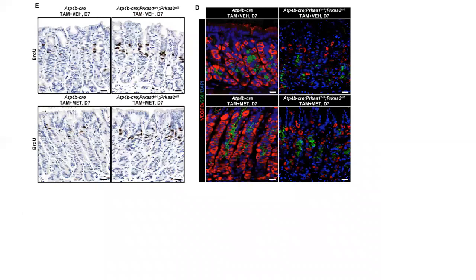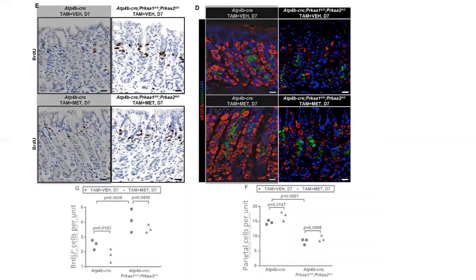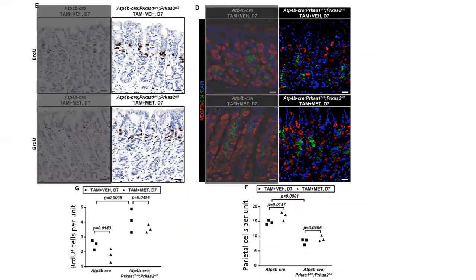To further explore the role of AMPK in the gastric progenitors, we examined isthmal proliferation and parietal cell census in the mutant mice treated with or without metformin in the context of injury. If AMPK truly functions in the progenitor population to guide parietal cell fate specification, metformin should still be able to influence proliferation and parietal cell number, despite loss of AMPK in parietal cells. Lo and behold, metformin was able to do just that, decreasing proliferation and increasing parietal cell number, even in the mutants.